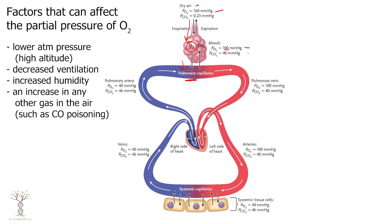In the lungs the partial pressure is around 100. It then circulates to the heart, and the left side of the heart pumps it out to all the tissues. In the tissues, once cells use oxygen, that partial pressure decreases from 100 in the lungs to around 40 in the tissues. Importantly, it's never zero — we never use all the oxygen in our blood, so there's always a reserve available.